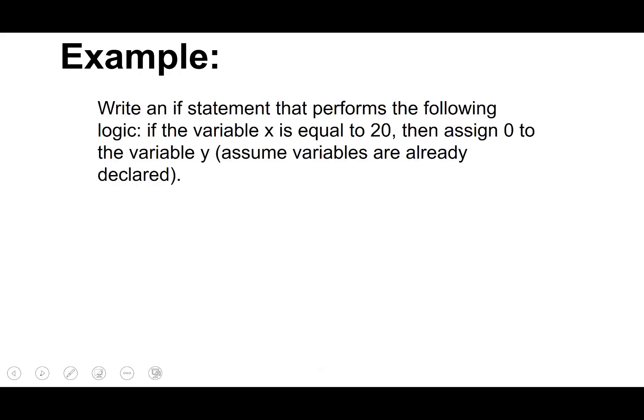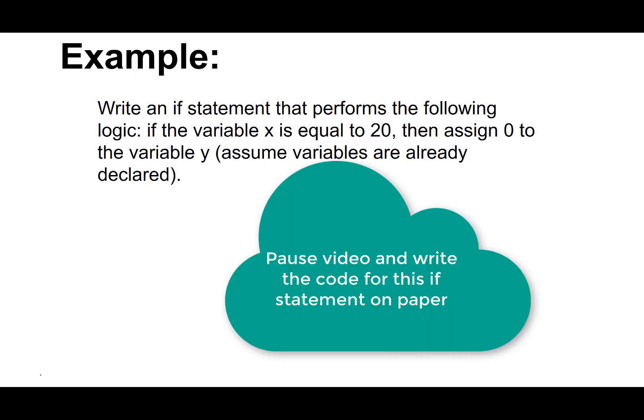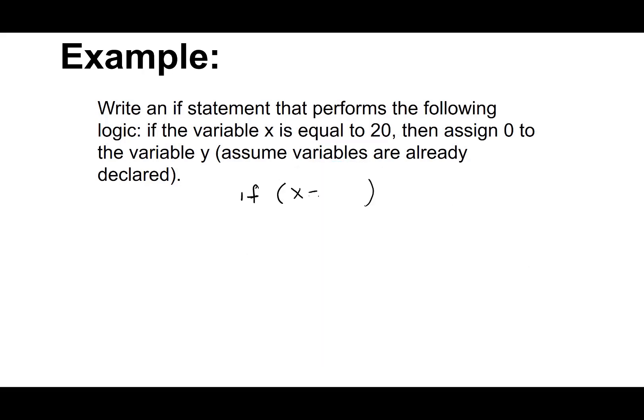Let's do a quick example. Write an if statement that performs the following logic: if the variable x is equal to 20, then assign zero to the variable y. Assume that the variables are already declared. So just write the if statement, if x is equal to 20, make sure to use the double equals not the single. And then we want to assign zero to the variable y if that's true.